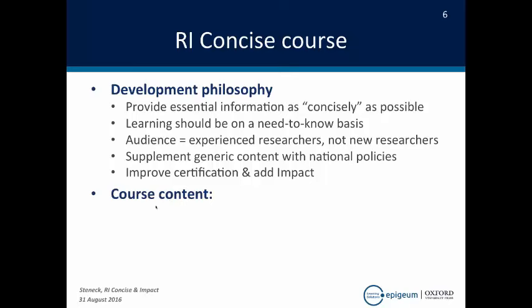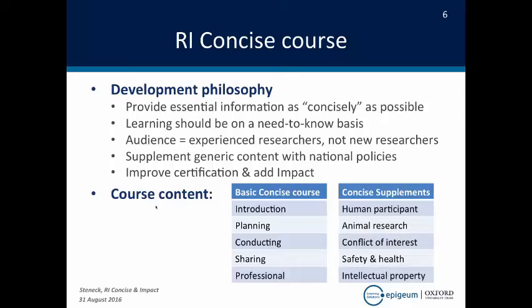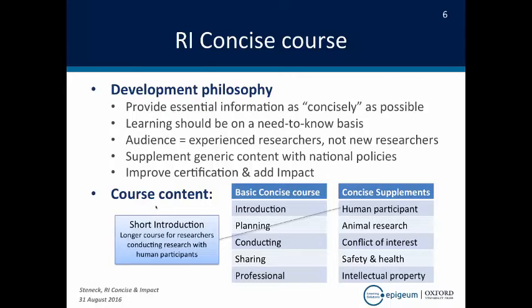The course content for the concise course is basically the same as for the full course — there's an introduction, and we go through planning, conducting, sharing, and professional topics. But the concise course now comes packaged with a series of supplements: human participant research, animal research, conflict of interest, safety and health, and intellectual property. The human participant course is a short introduction — it is not the full course that a researcher needs if they do human subjects research. These supplemental courses are about five to six screens; they're very short introductions.